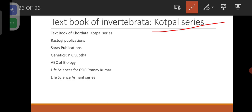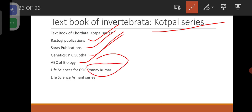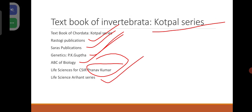Rastogi publications and Saras publications will help you a lot. Genetics by P.K. Gupta. ABC of Biology if you can afford it. Life Sciences for CSIR by Pranav Kumar and Arihant series. It depends on your affordability, and even if you don't buy any textbook, don't worry — the concept is important. Much material is available online; try to be very confident and try to discuss with your friends.